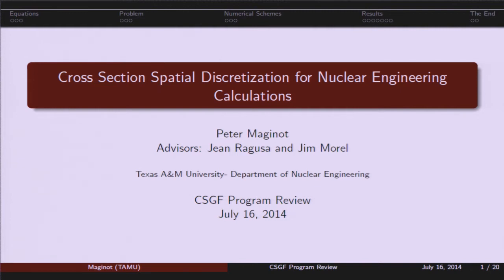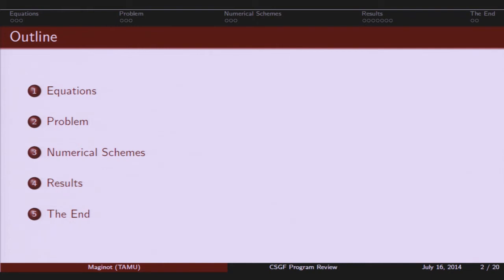All right. Thank you for that introduction. So we said the title so we can keep moving on so I can put you all to sleep after that nice lunch. So I'll go through a brief outline. Basically, I'll give some equations of radiation transport, go over a problem I encountered, show some numerical schemes that caused the problem and then solved the problem, show the world's greatest line graphs, and then I'll stop.